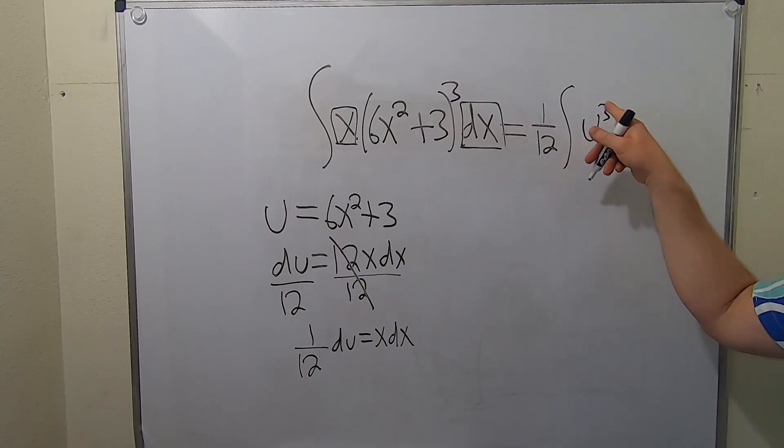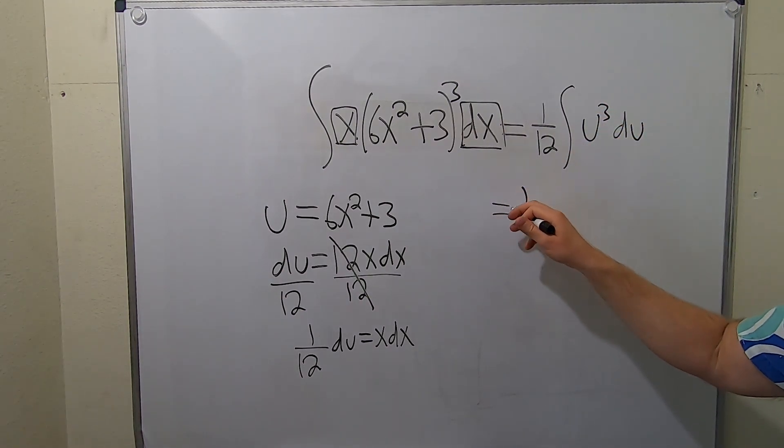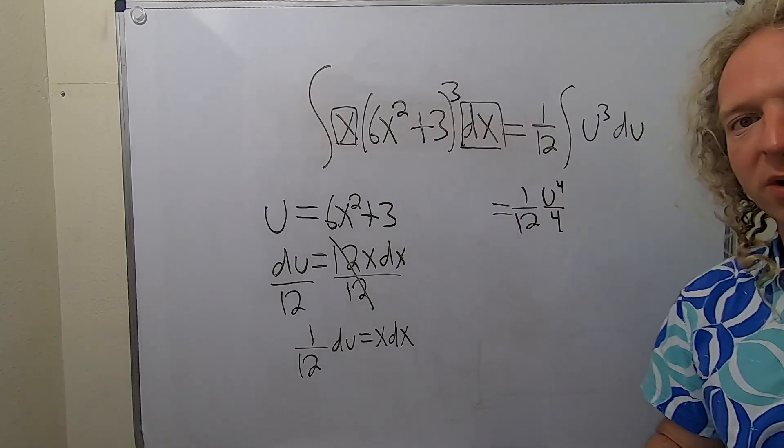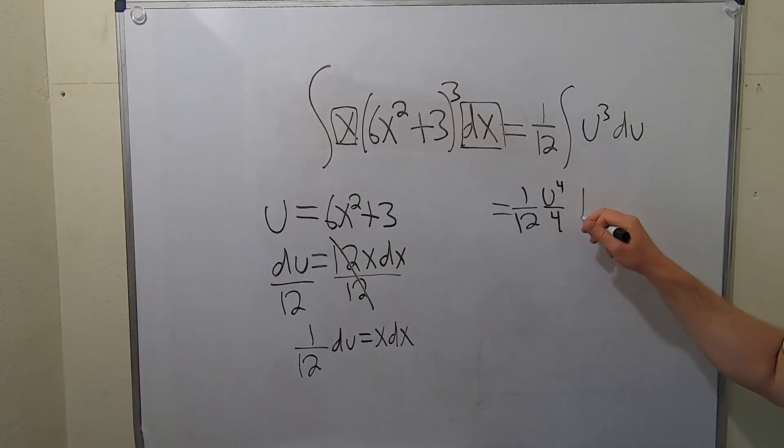Now we can integrate. We add 1 and divide. So 3 plus 1 is 4. The 1/12 hangs out, so we get u to the 4 over 4, and don't forget your constant of integration, capital C.